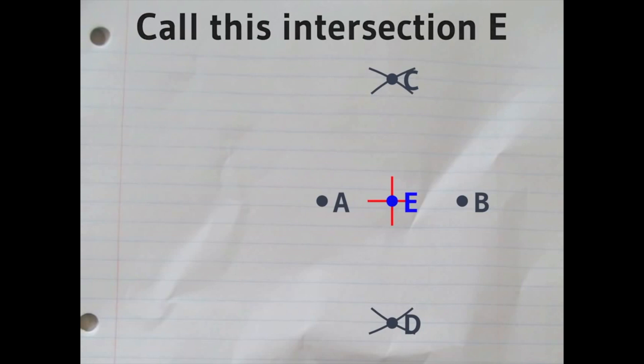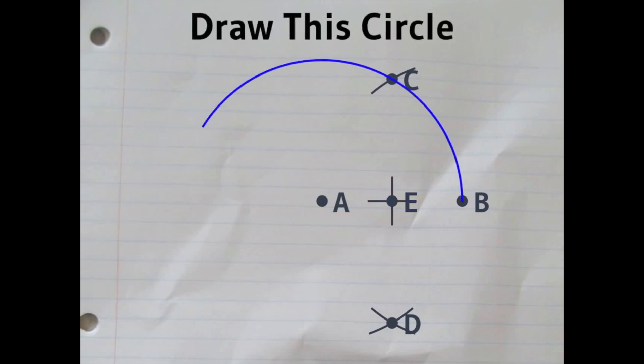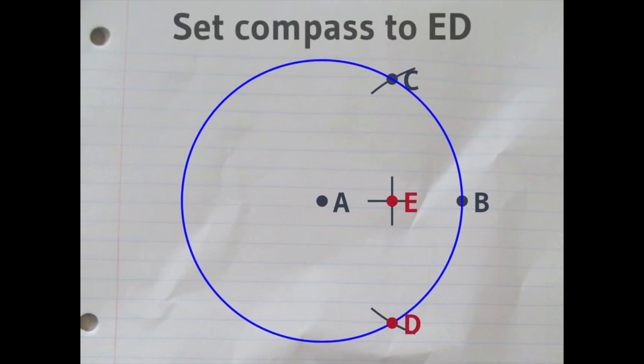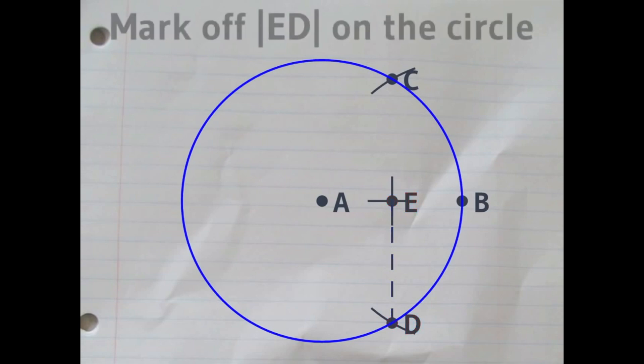Then it will turn out the distance between D and E is almost exactly right to be the edge length of a regular heptagon. So if you set your compass to DE and mark that distance off around the circle,